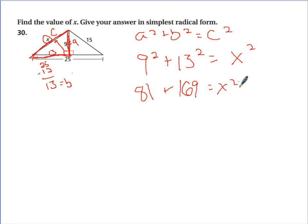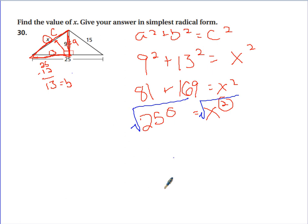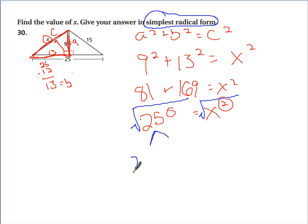81 plus 169 equals X squared. 81 plus 169 is 250, so 250 equals X squared. We don't want the square, so we take the square root. Taking the square root of 250 gives a decimal — we don't want that, we want simplest radical form. So we do the factor tree: find two numbers that multiply to 250 — how about 25 and 10.